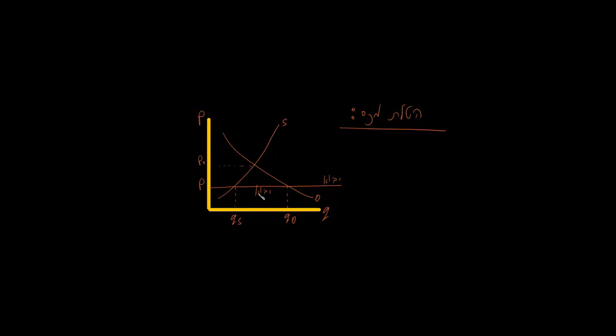You can see that where the demand curve meets the world's price line. We'll call this bigger amount QD for domestic demand. So now we've got this gap. The people in the country want to buy way more of the product than the local companies are actually making. And how is that gap filled? You guessed it, imports. That big space you see on the graph is the total amount of stuff being brought in from other countries.